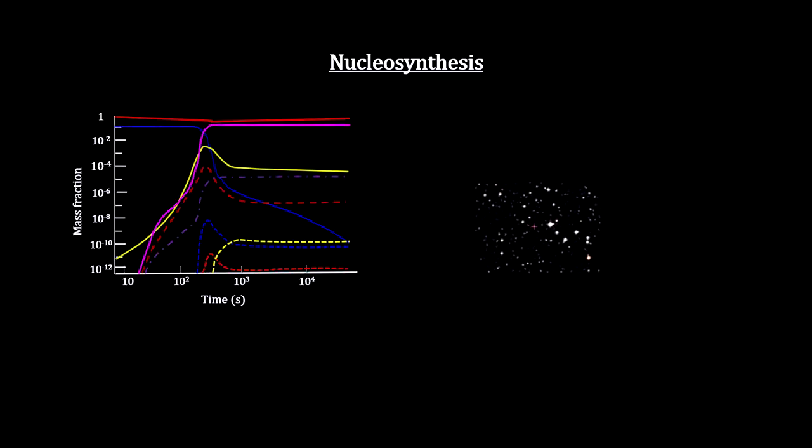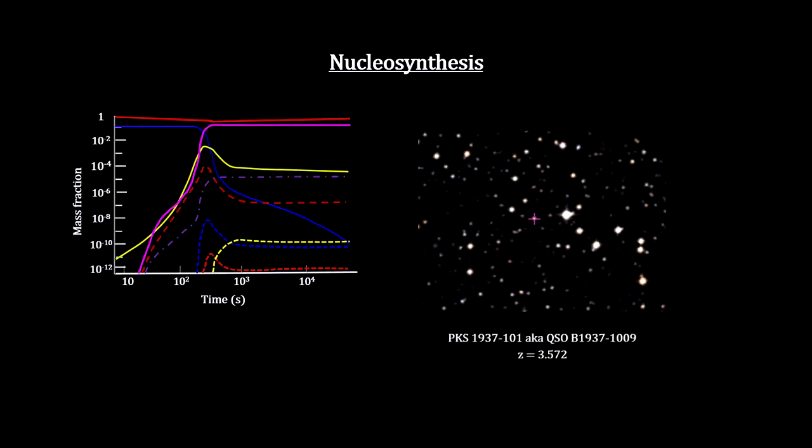The best way to measure the primordial percentages of these elements is to look at the spectra of distant quasars like this one. The actual amounts of hydrogen, helium, beryllium, and lithium in the early universe does match the predicted levels. This represents significant evidence that the Big Bang nucleosynthesis process did occur.